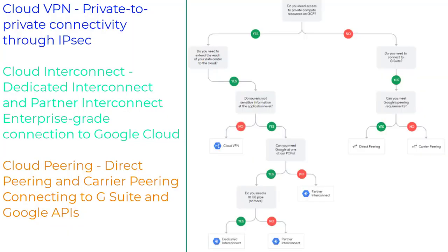With all the above overview on GCP Cloud Network Connections products, let's move to the decision tree. Now it's time to use the decision tree to choose the network connection product to connect your applications to Google Cloud. You may want to ask simple questions such as: Do you need to access private compute resources on GCP? Do the bandwidth and performance of your current connection to Google servers meet your business requirements? Do you encrypt sensitive information at the application level? Do you already have, or are you willing to install and manage access and routing equipment in one of Google's Point of Presence locations?